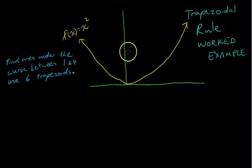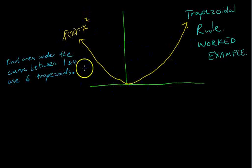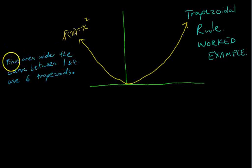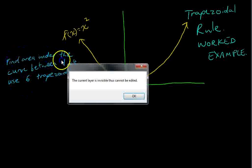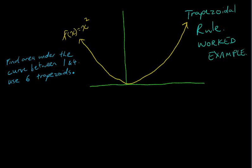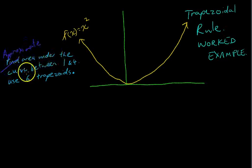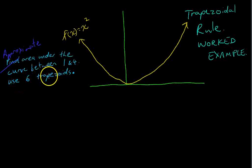So here we have a really simple function: f of x equals x squared — a parabola, pretty straightforward. We want to approximate the area under the curve between 1 and 4 using 6 trapezoids. We're approximating it, not finding the exact area — we're going to find an approximate area between 1 and 4 using 6 trapezoids.